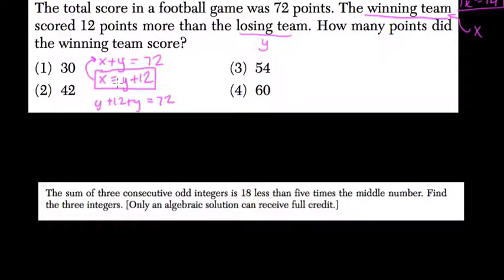All I did was plug in the fact that x equals y plus 12 into this first equation, and I replaced the x variable with y plus 12. So we get y plus 12 plus y is 72. Simplify that by combining like terms: 2y plus 12 is 72.